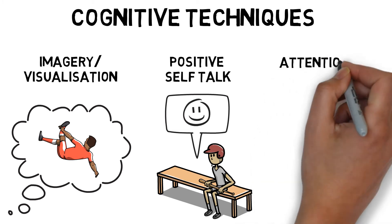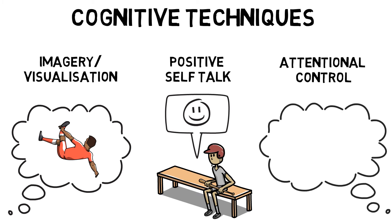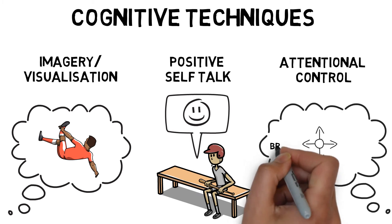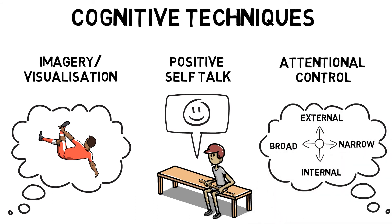Attention control looks at changing focus of attention to detect relevant cues only. Broad external are used during games to detect fast changing situations and identify the best option. External narrow are used to concentrate on specific objects or tasks, possibly with a limited number of cues. Narrow internal are used to mentally rehearse a skill or task. And internal broad are used to analyse performance and plan future tactics.